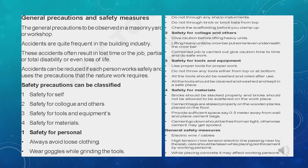General precautions and safety measures: accidents are frequent in the building industry. Safety precautions can be classified as safety for self, safety for colleagues and others, safety for tools and equipment, and safety for materials. One category is personal safety.